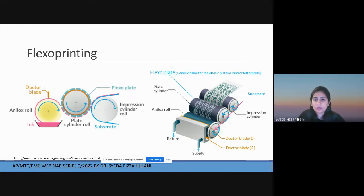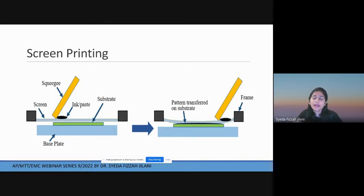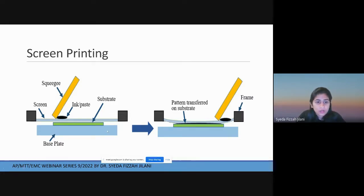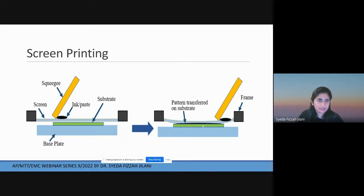The third method is screen printing — one of the easiest forms. You have a mesh screen, usually with a wooden frame, where the desired pattern is left open as a net and the rest made opaque. When you place the screen on the substrate, add ink on top, and move the ink with a squeegee, the pattern transfers onto the substrate. It's a simple method with minimal losses, easy to print and handle.